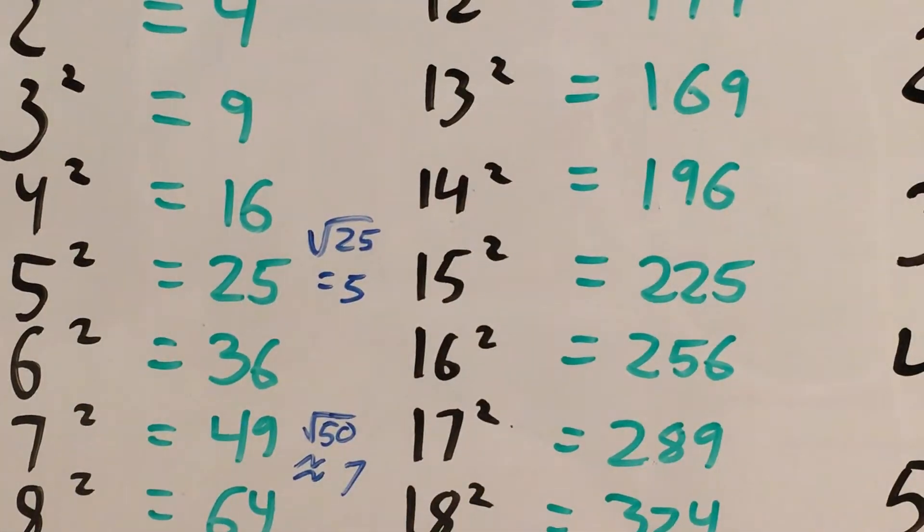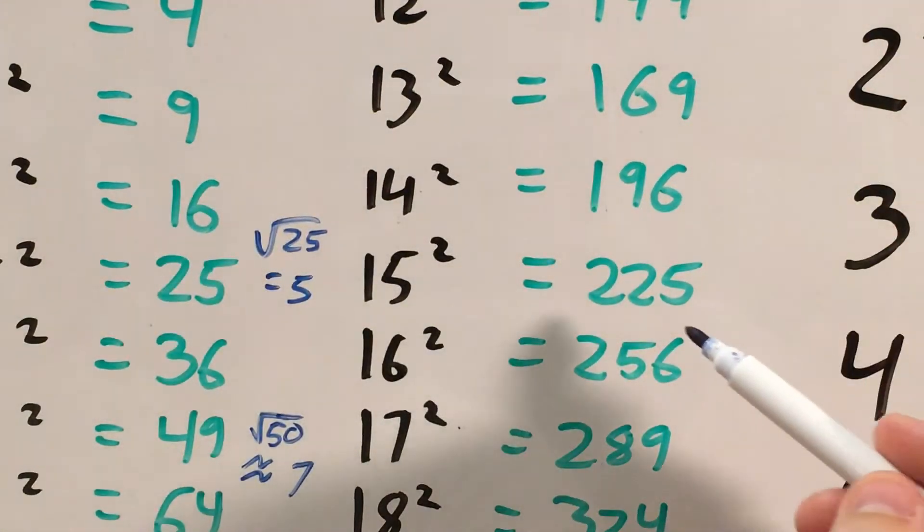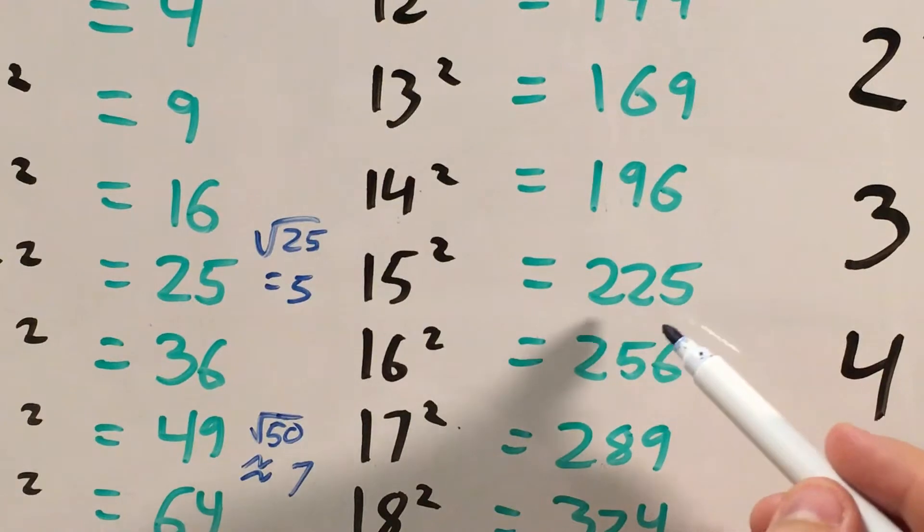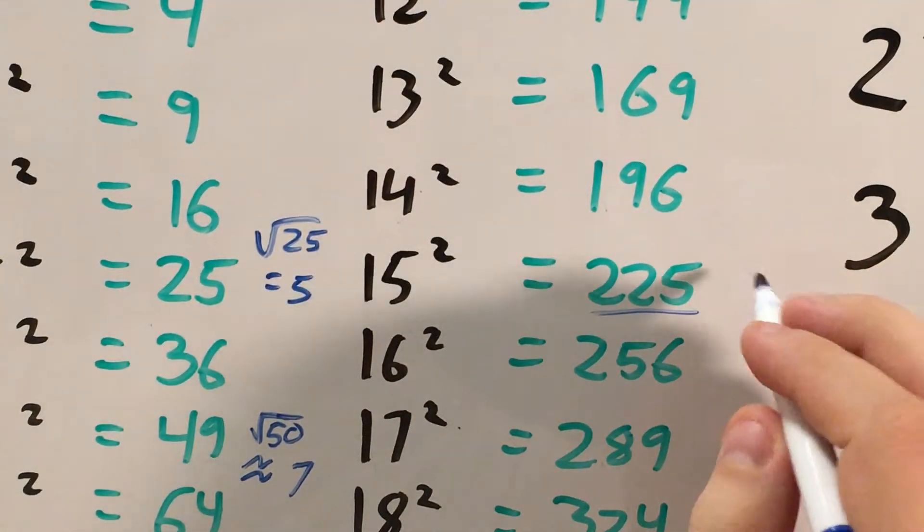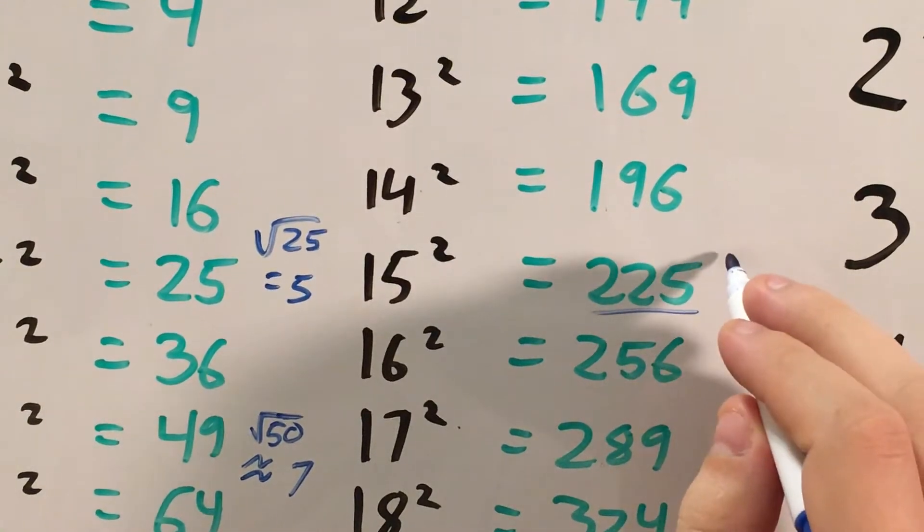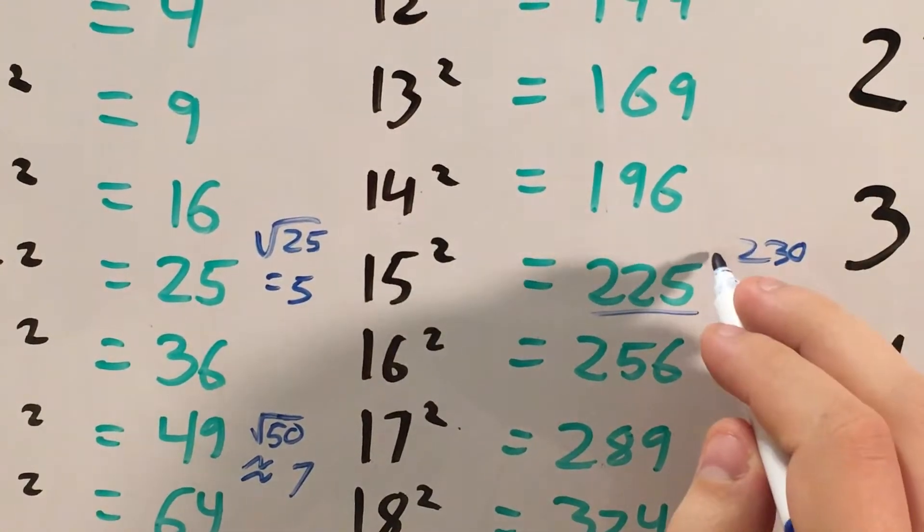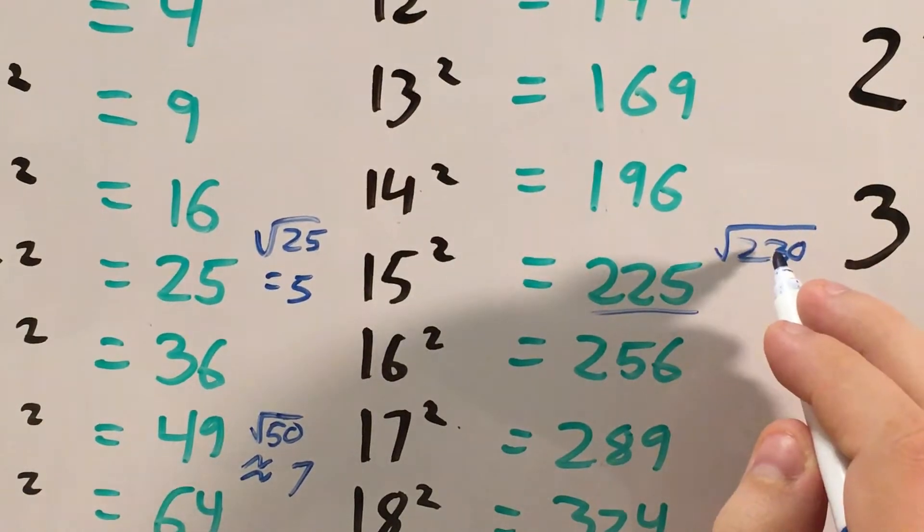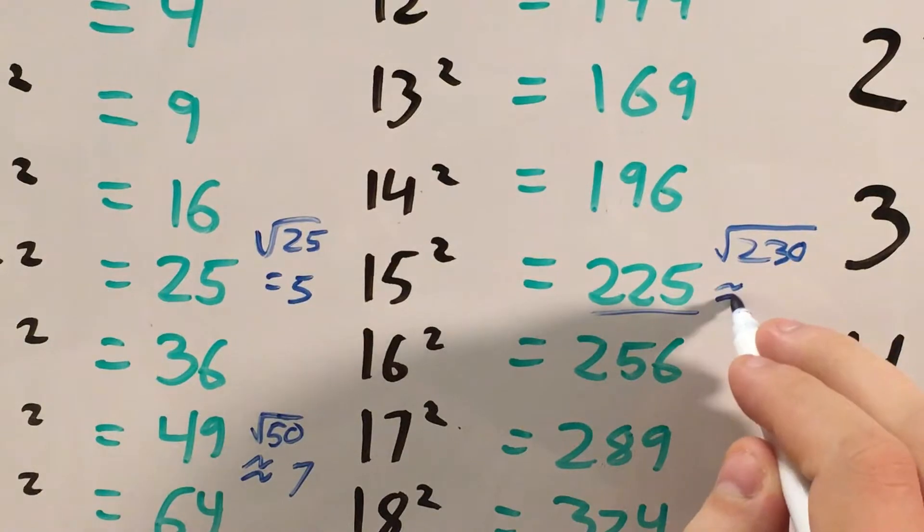So I'm trying to do that with the number 230. And as I look through my square numbers, the closest square number I see to 230 is actually here, 225. So since 225 is about 230, the square root of 230 is going to be closest to the square root of 225, which was 15.